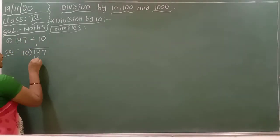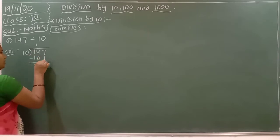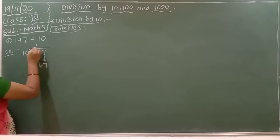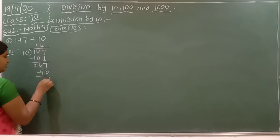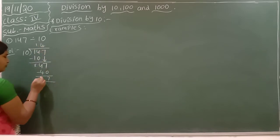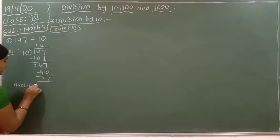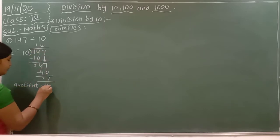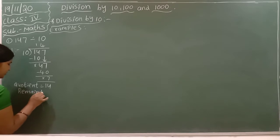10 times 1 is 10. Subtract: 4 minus 0 is 4, 1 minus 0 is 1 — bring down 47. 10 times 4 is 40. Subtract: 4 minus 4 is 0, remainder 7. So the quotient is 14 and the remainder is 7.